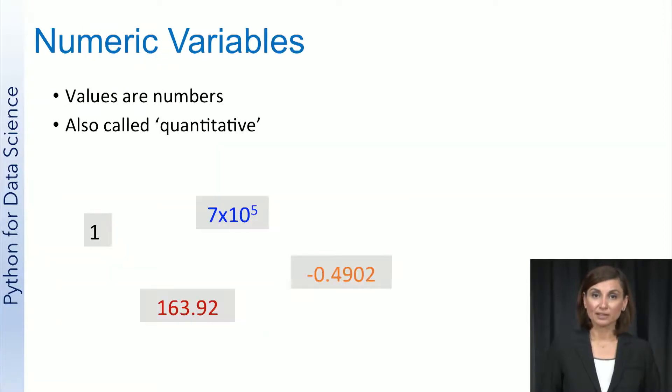As the name implies, numeric variables are variables that take on numbers. They can be measured, and their values can be sorted in order in some way. Note that a numeric variable can take on just integer values or be continuous valued. It can also have just positive numbers, negative numbers, or both.